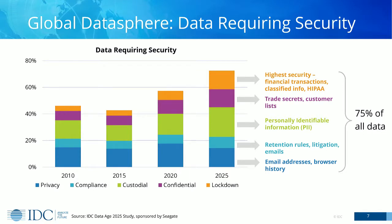There's another side to this: data requiring additional security. By 2025, we expect 75% of all data to require some kind of special handling — privacy data, compliance-related data, personally identifiable information, confidential information like trade secrets, and lockdown information such as financial transactions, HIPAA, and classified data. IT organizations really can't treat data as one size fits all. It will require a significant effort to deal with regulatory requirements and how to protect and treat that data appropriately.